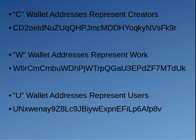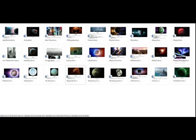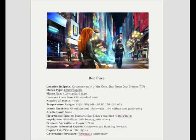The creator wallet is different from other wallets in that it gives you access to create smart contracts in order for workers to finish the work on your different products. The next wallet address is the work wallet addresses — these would represent all the things I showed you. I would create a work wallet address for each one of these planets because this is work I need finished. Within this work wallet address, for each uploaded planet — like the planet Boz Fura — I would create a wallet for it.